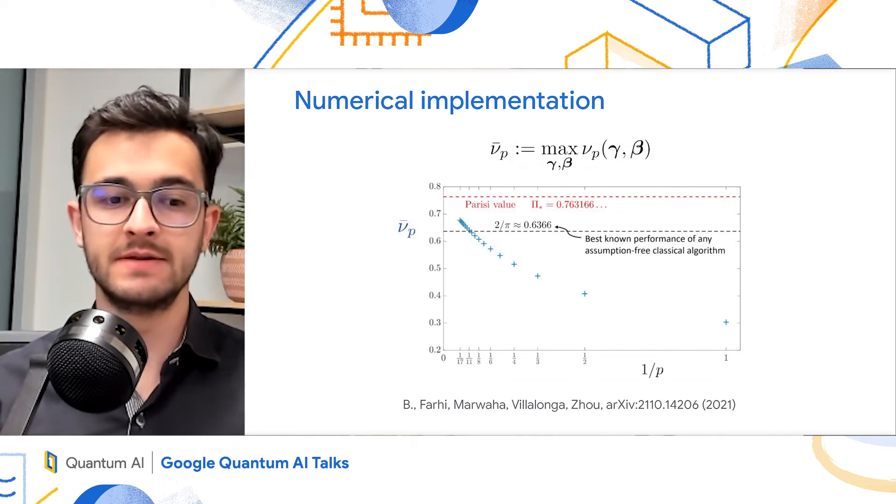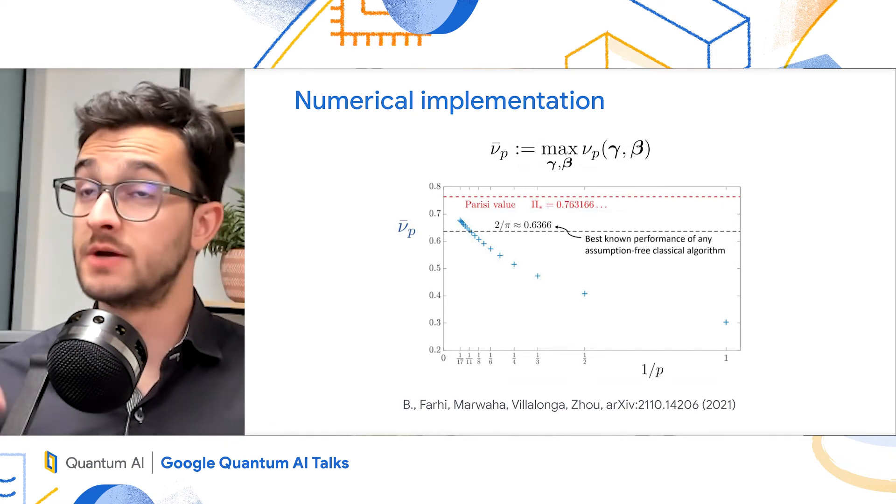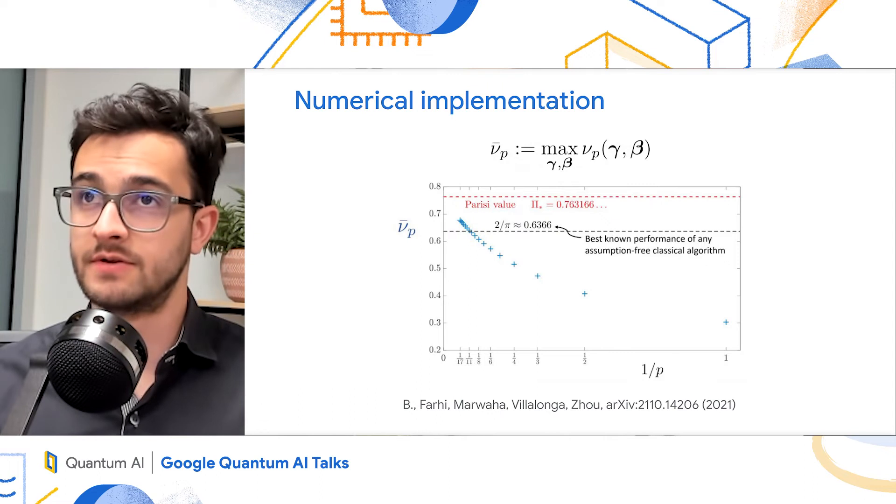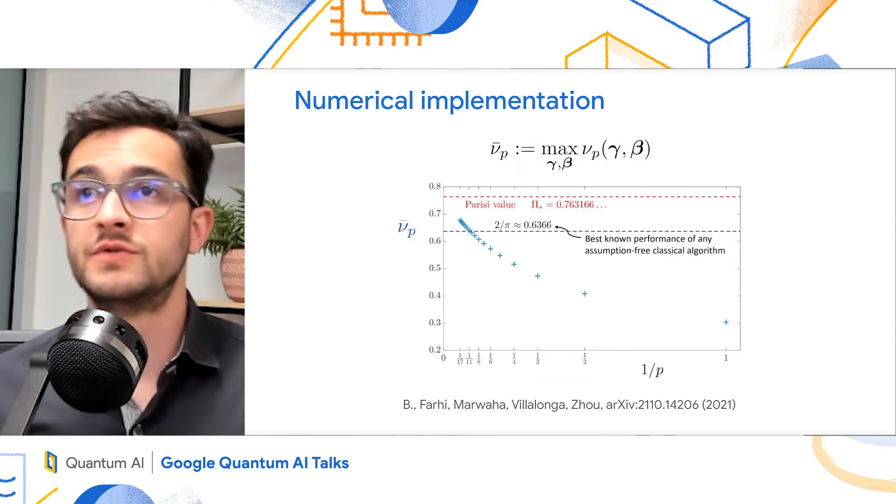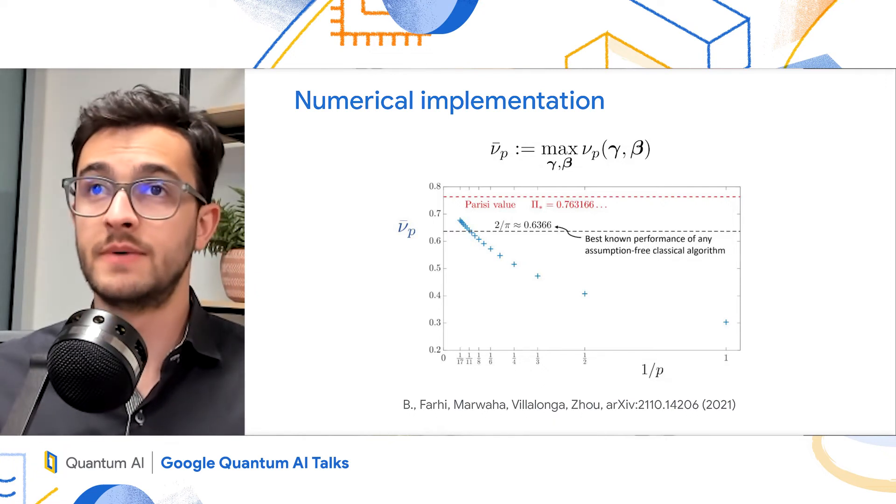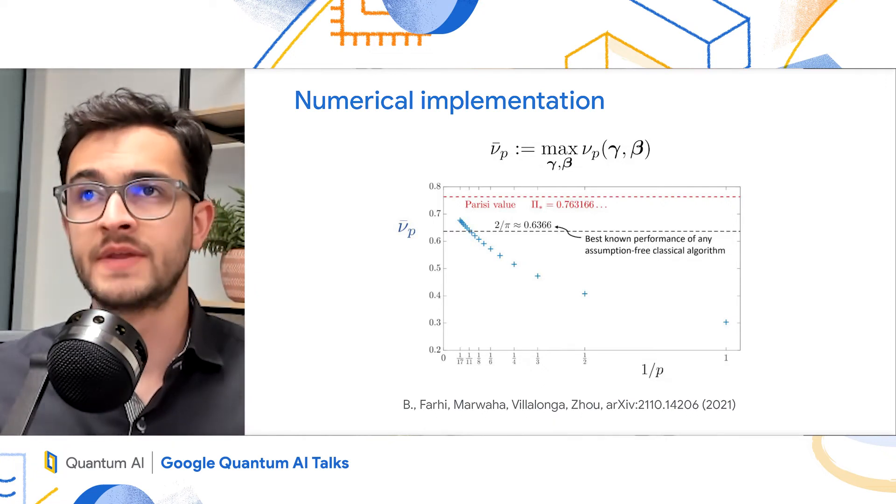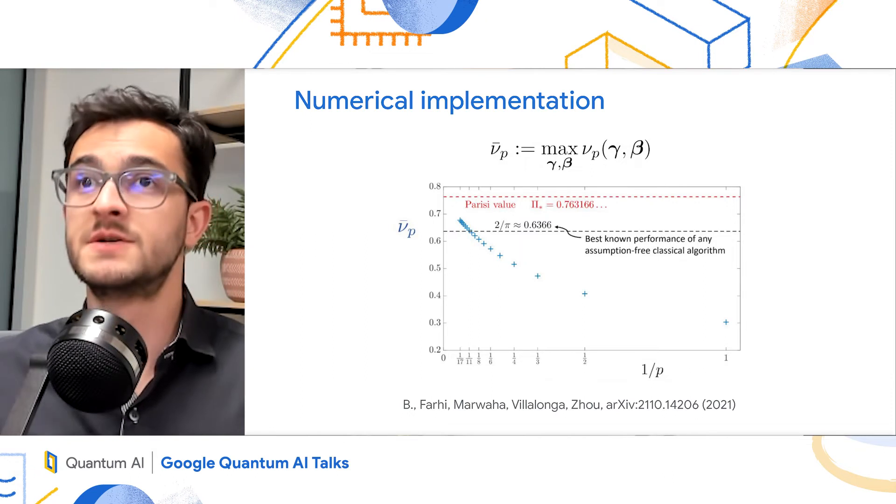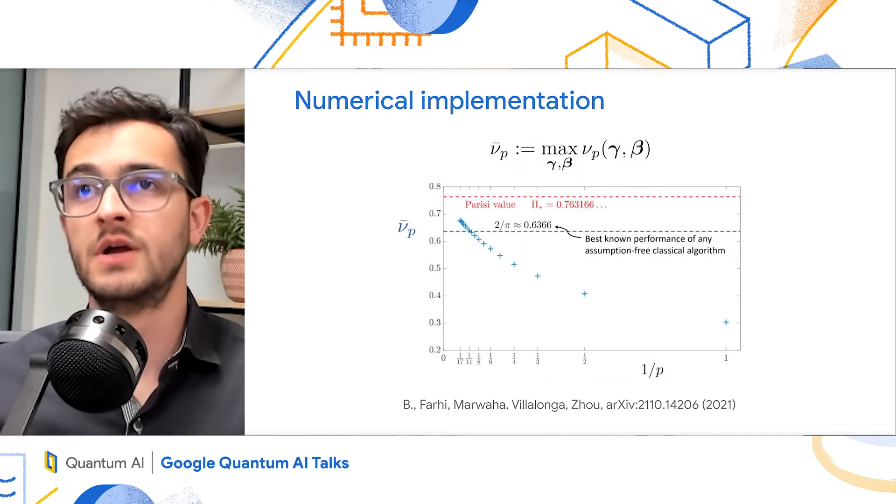So we numerically implemented this, all the way to p equals 17, optimizing for the angles. And you can see again, p equals 11, we surpassed the 2 over pi. This implies that the QAOA at p equals 11 and greater is the best assumption-free algorithm for this problem.